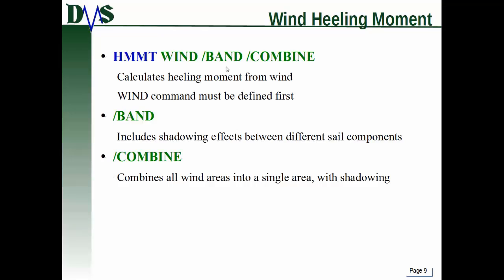These two options have to happen one after the other and in this sequence: when you issue your HMMT command, the band option has to come before the combine option. The band option will include shadowing effects between different sail components. Then combine couples with the band option and combines all of the different wind areas of all your different sail parts into one single area with shadowing. It's highly recommended that you do that.